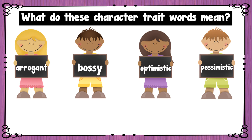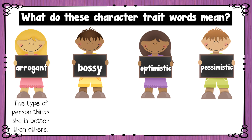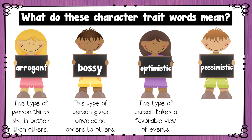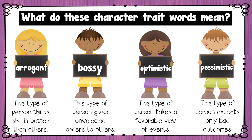What about these character trait words — what do they mean? Arrogant — this type of person thinks she is better than others. Bossy — this type of person gives unwelcome orders to others. Optimistic — this type of person takes a favorable view of events. Pessimistic — this type of person expects only bad outcomes.